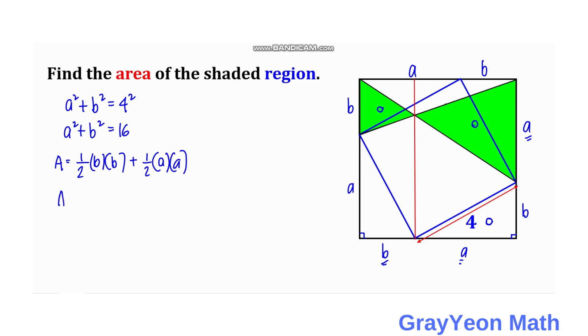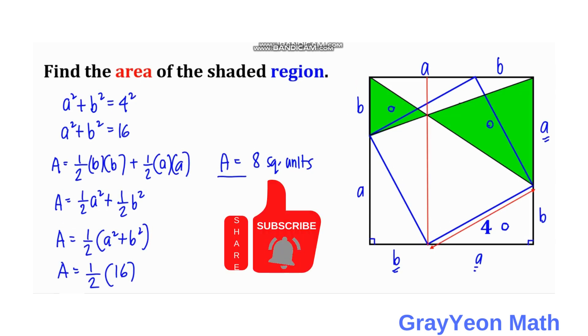So we can simplify this. We have area is equal to one half times a² plus one half b², so we have area is equal to one half times (a² + b²). But a² + b² is actually 4², so area is equal to one half times 16. So area is equal to 16 over 2, which is equal to 8 square units, and that is our answer.